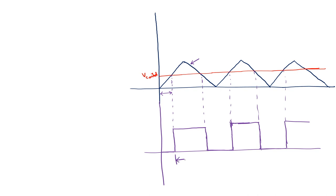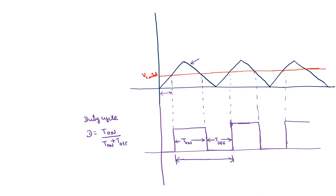In one complete period, we have Ton and Toff. Duty cycle is defined as Ton divided by Ton plus Toff. This Ton duration is controlled by V control. For a given value of V control, there is a corresponding Ton duration. If we increase or decrease V control, the duty cycle changes accordingly.